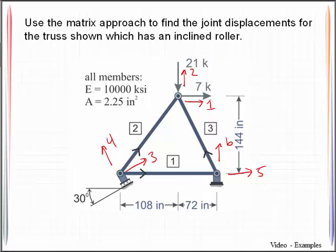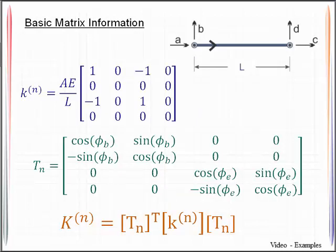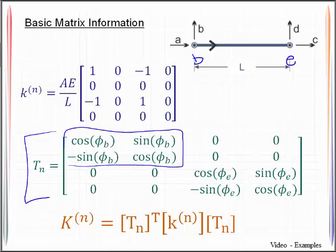Now to handle those, the degrees of freedom are going to be handled as such in a generic fashion where this will be the beginning end of the member and this will be the ending end of the member. And if you do that I want you to pay attention to the transformation matrix here where this upper quadrant is based upon the orientation of the degrees of freedom associated at the beginning end and here is the orientation at the ending end.